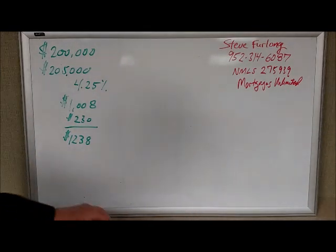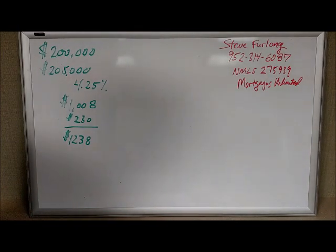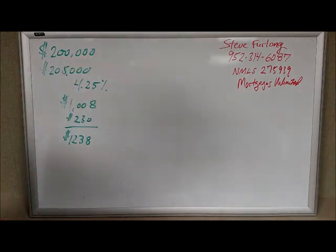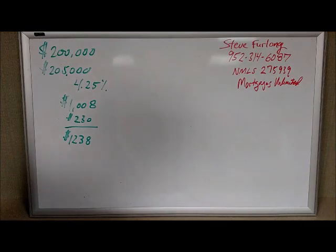So how does a streamline work? An FHA streamline is a loan program where you can refinance an existing FHA loan. You don't necessarily need to have an appraisal. And you can only include the existing balance of the loan. So you cannot finance in closing costs. So here's how we calculate the loan amount.